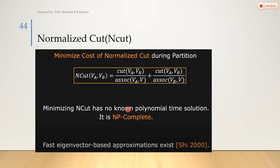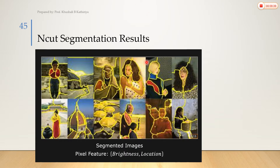Minimizing the normalized cut has no polynomial-time solution — it is an NP-hard problem, similar to what you study in algorithm analysis. Here is an example: given a complex image, applying the normalized cut segments it properly — showing the background, foreground regions, and other components separately.